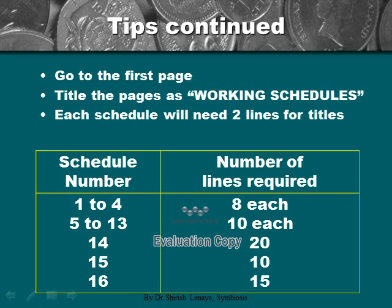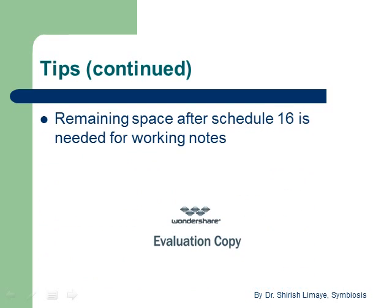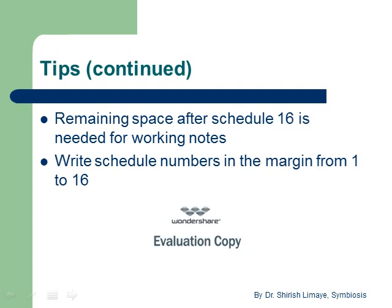Schedule 1 to 4 will need 8 lines each; Schedule 5 to 13 will need 10 lines each; Schedule 14 needs 20 lines; Schedule 15 needs 10 lines; Schedule 16 needs 15 lines. The remaining space after Schedule 16 is needed for additional working notes. Then write schedule numbers in the margin from 1 to 16.